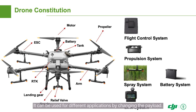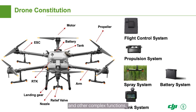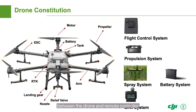The Agris drone mainly consists of the flight platform and payload. It can be used for different applications by changing the payload. The flight platform consists of a flight control system, a power system, and a link system. The flight control system enables automated flight and other complex functions. The power system enables all drone operations like flight and spraying. The link system establishes a two-way connection between the drone and remote controller.